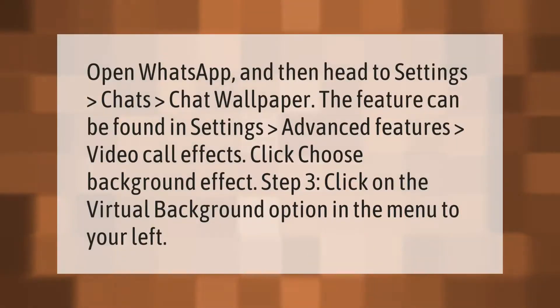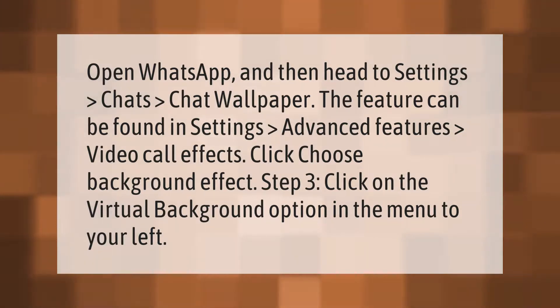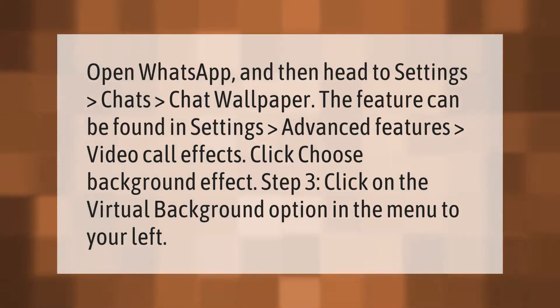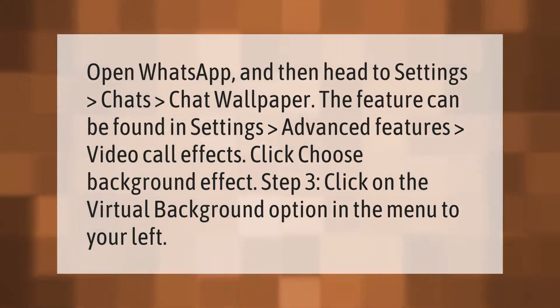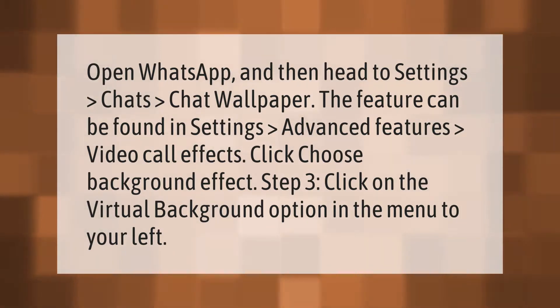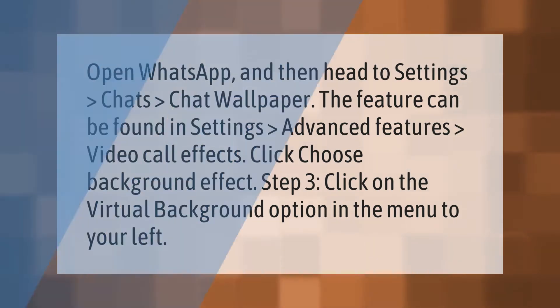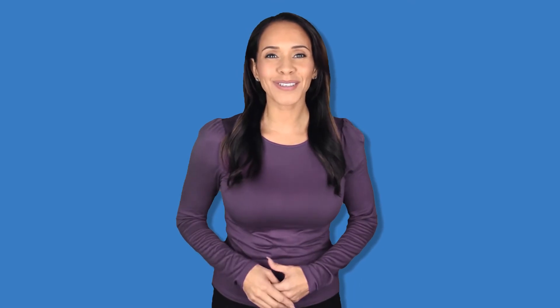Open WhatsApp and head to Settings, then Chats, then Chat Wallpaper. The feature can also be found in Settings under Advanced Features — Video Call Effects. Click 'Choose background effect,' then in Step 3 click on the virtual background option in the menu to your left.